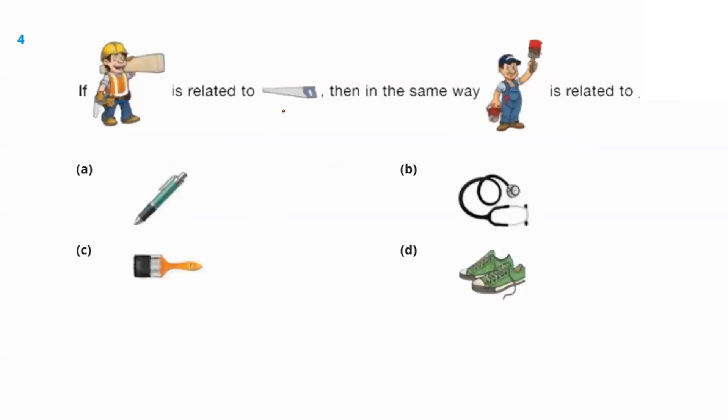Next question. If this is related to axe, that means the carpenter related with an axe. So, in the same way, painter will be related to the paintbrush option C is our answer.